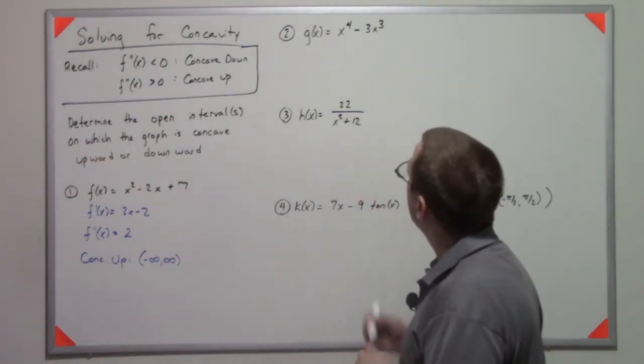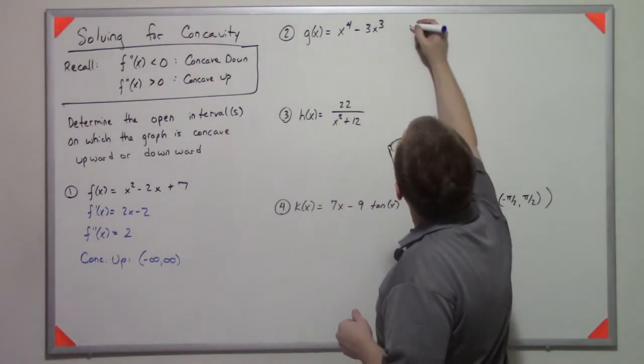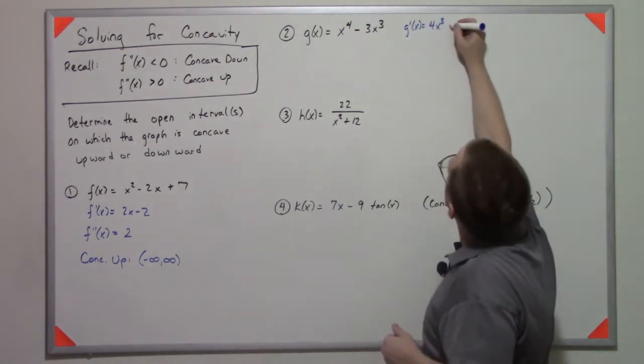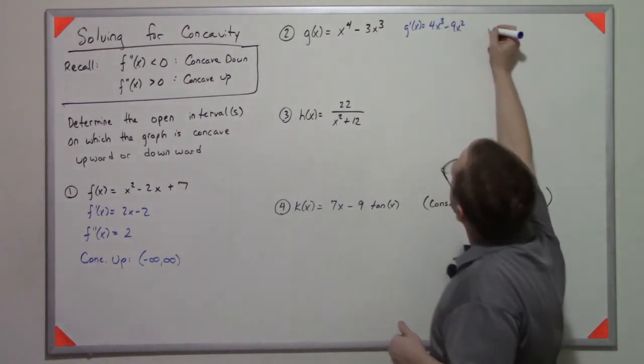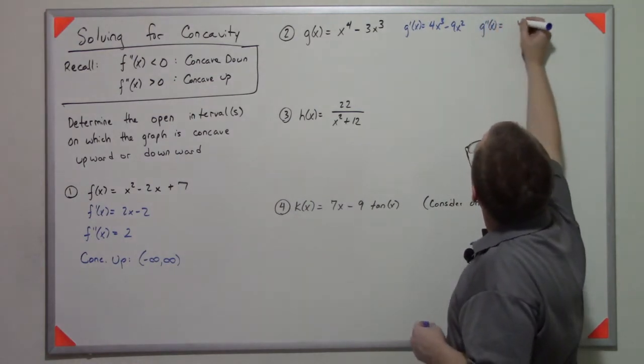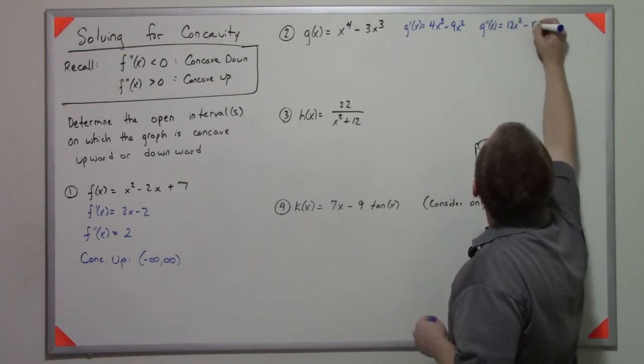Let's continue. If I have this function, I can take its first derivative, 4x cubed minus 9x squared. And then I can take its second derivative as 12x squared minus 18x.